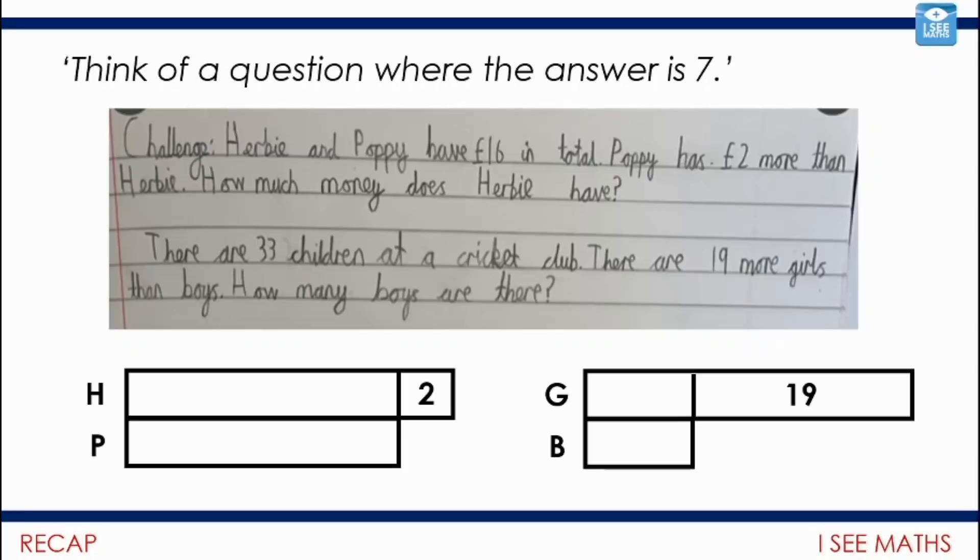We have the first example: Herbie and Poppy have 16 pounds in total, Poppy has two pounds more than Herbie, how much money does Herbie have? And then: there are 33 children at the cricket club, there are 19 more girls than boys, how many boys are there? I think in designing this question, the child's been thinking, what must we have as our last step? We must be dividing 14 by 2, and the question must ask for the smaller part here.